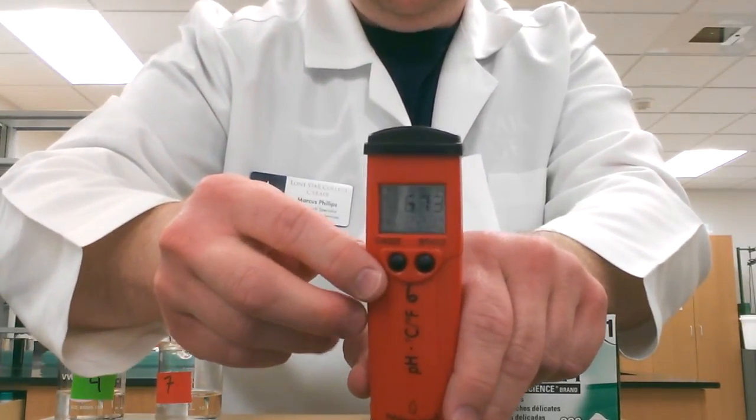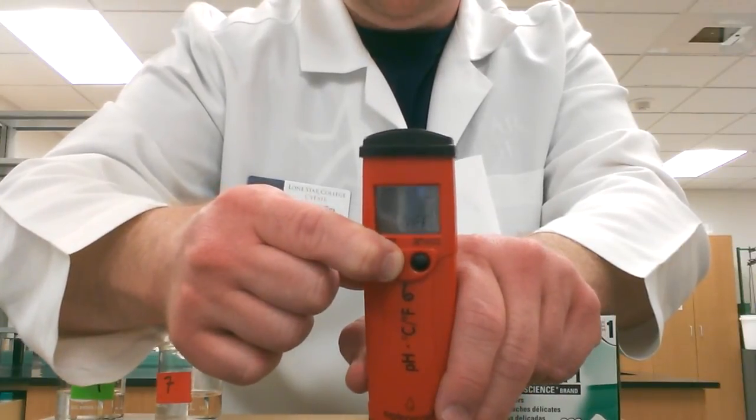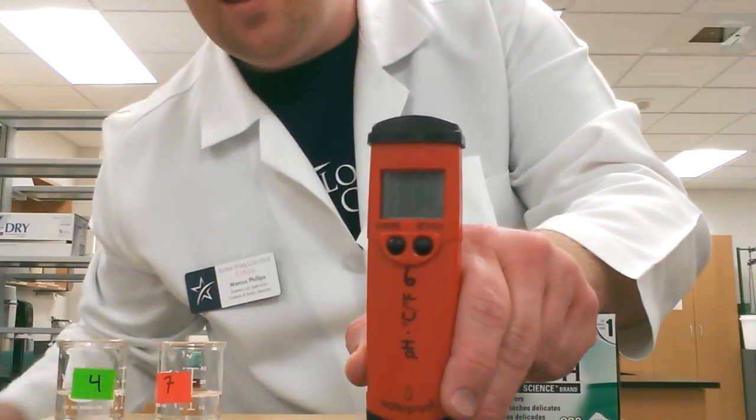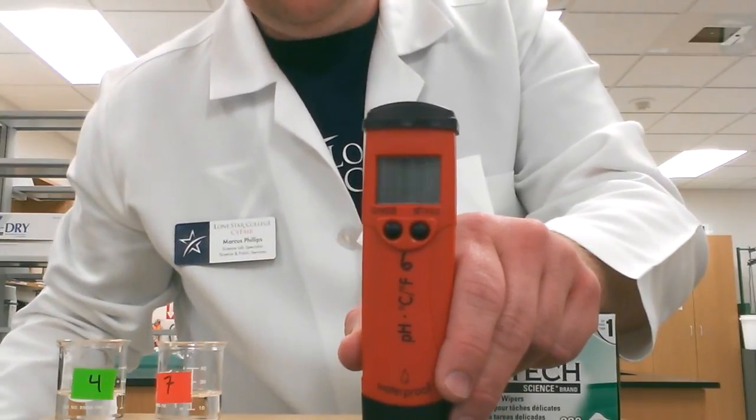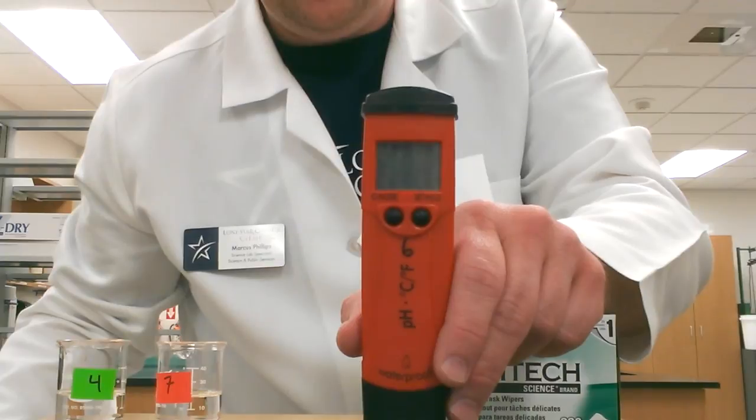And I'm not going to be using this, so I'm going to go ahead and turn this off by holding down the power button one more time. And now it's turned off. So, now you know how to calibrate this new handheld pH meter by Hanna Instruments.